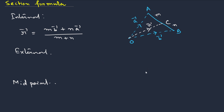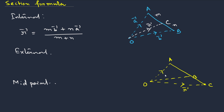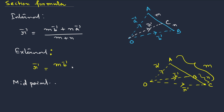For external division: if point C lies outside AB — meaning C divides AB externally in ratio m:n — then the formula changes. The position vector r bar of C is: r bar = (m·b bar − n·a bar) / (m − n). This is called external division.